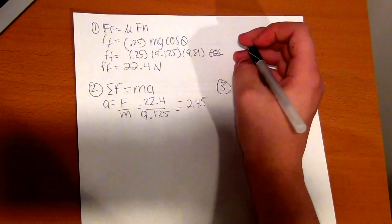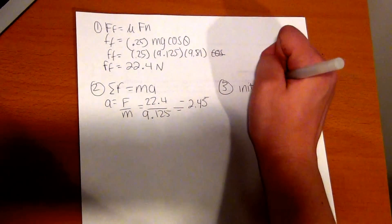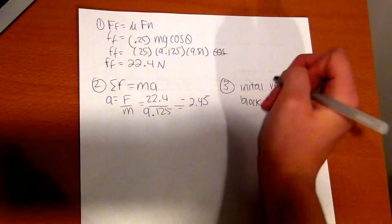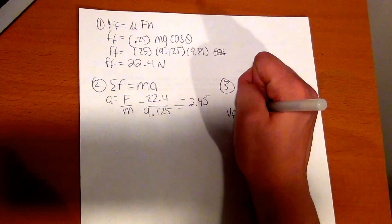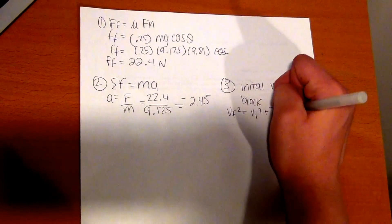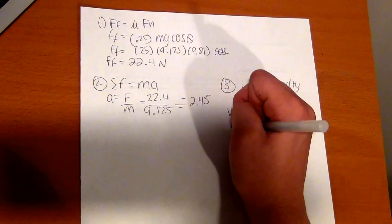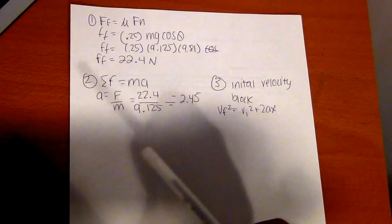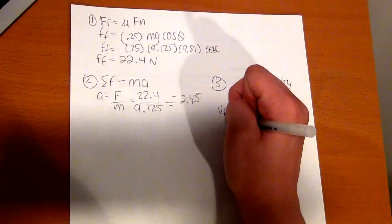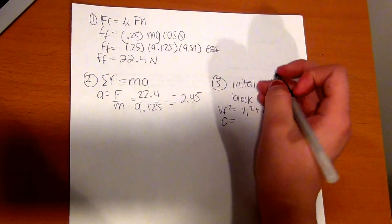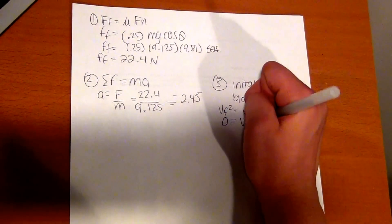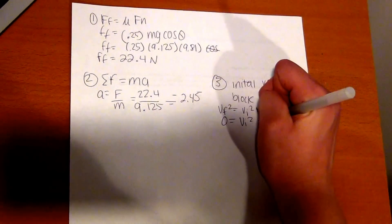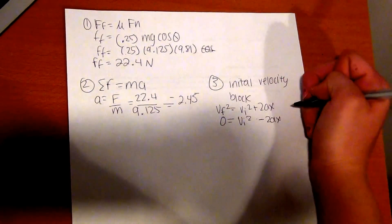Your third step is to find the initial velocity of the block. We want to use the formula Vf squared equals Vi squared plus 2AX. Since we know that the final velocity of the block is zero because it's not moving, we can just put zero for Vf squared. And since we're solving for Vi squared for the initial velocity, we'll just leave it like that. And since it's slowing down, we have it to be negative 2AX or minus 2AX.